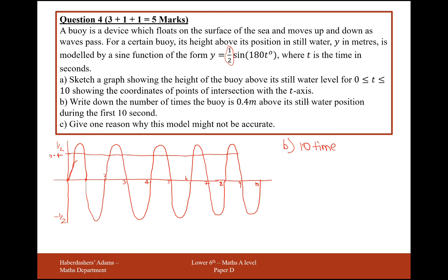Oh, sorry, not ten times. How many times the buoy is above the still water position during this? So it's ten times it's at 0.4 meters, but it's five times above it. That makes a bit more sense.